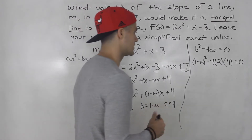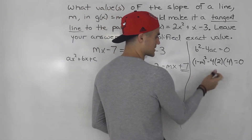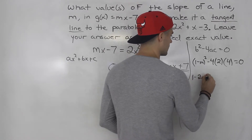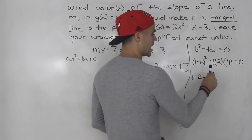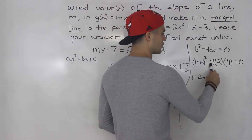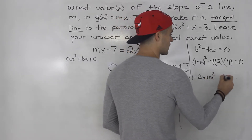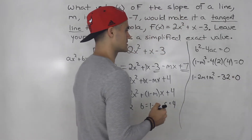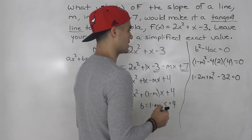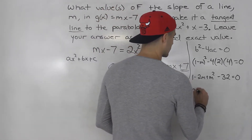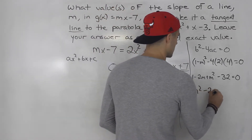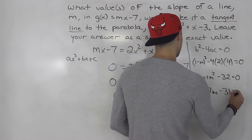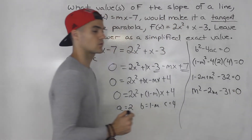From here it's pretty straightforward — this is just a quadratic to solve. So (1 − m)(1 − m) gives us 1 − 2m + m², and then −4 × 2 × 4 = −32. So we have 1 − 2m + m² − 32 = 0, which simplifies to m² − 2m − 31 = 0.